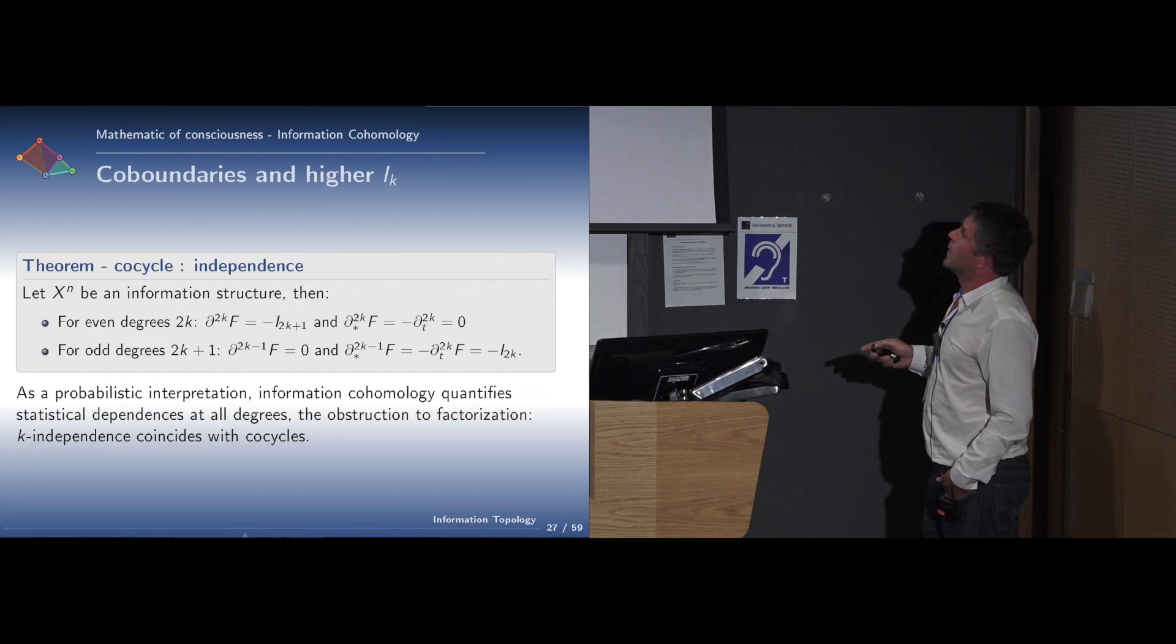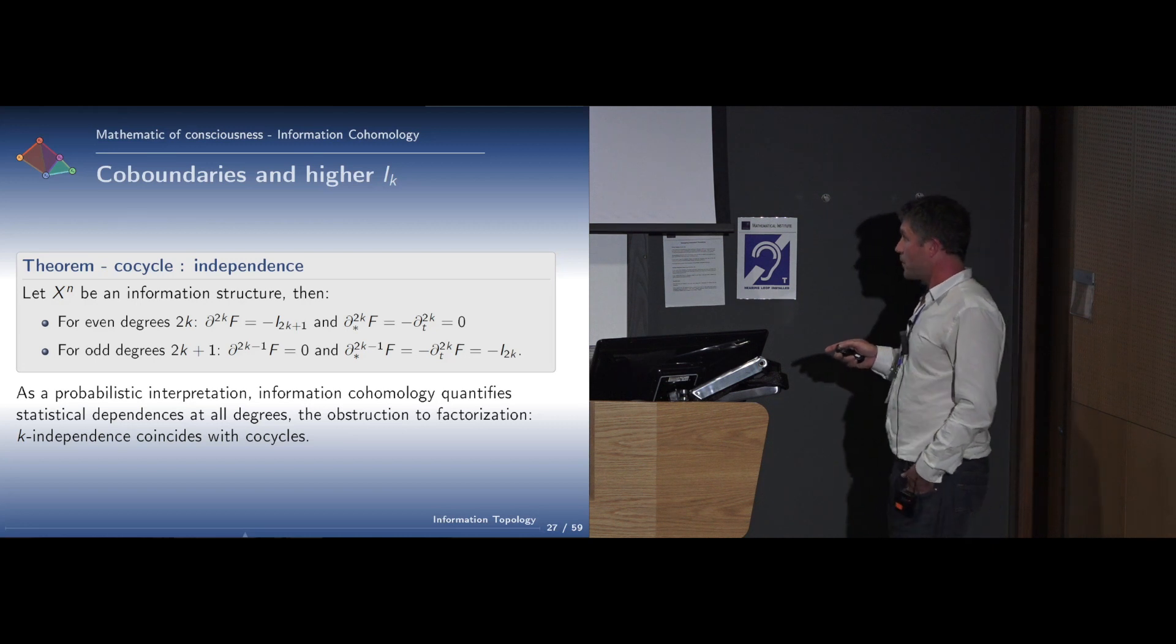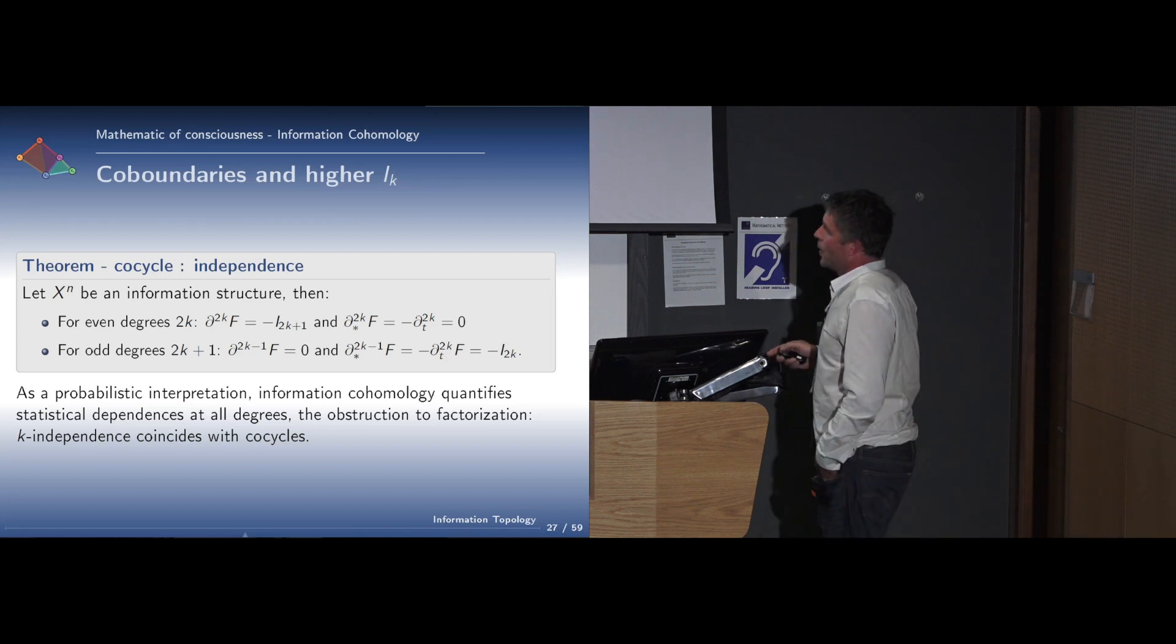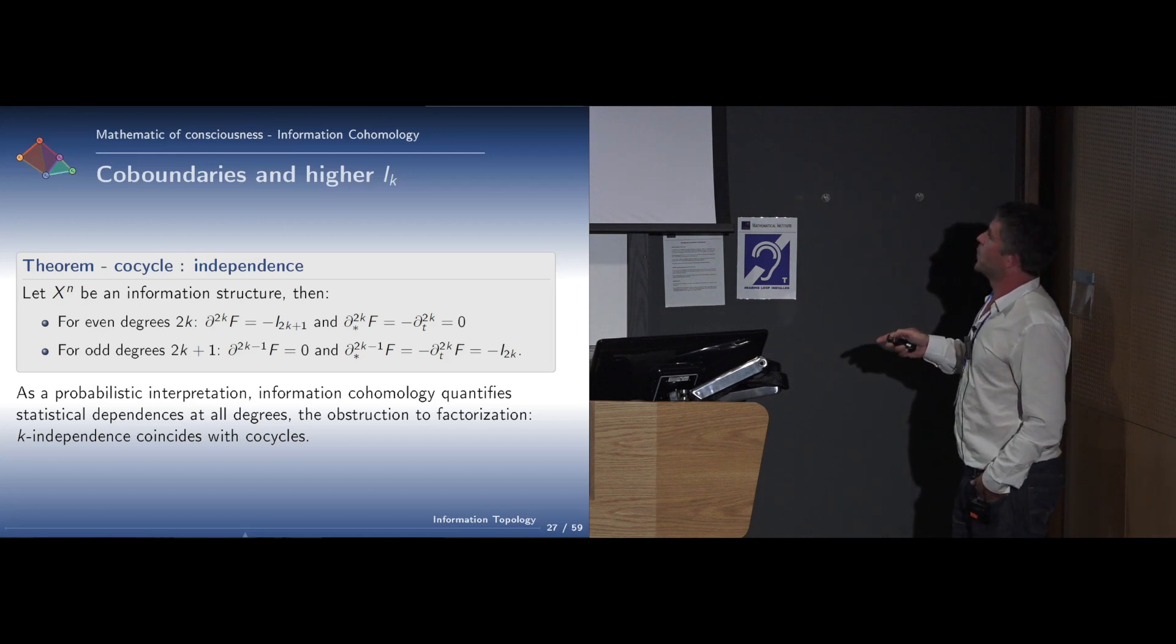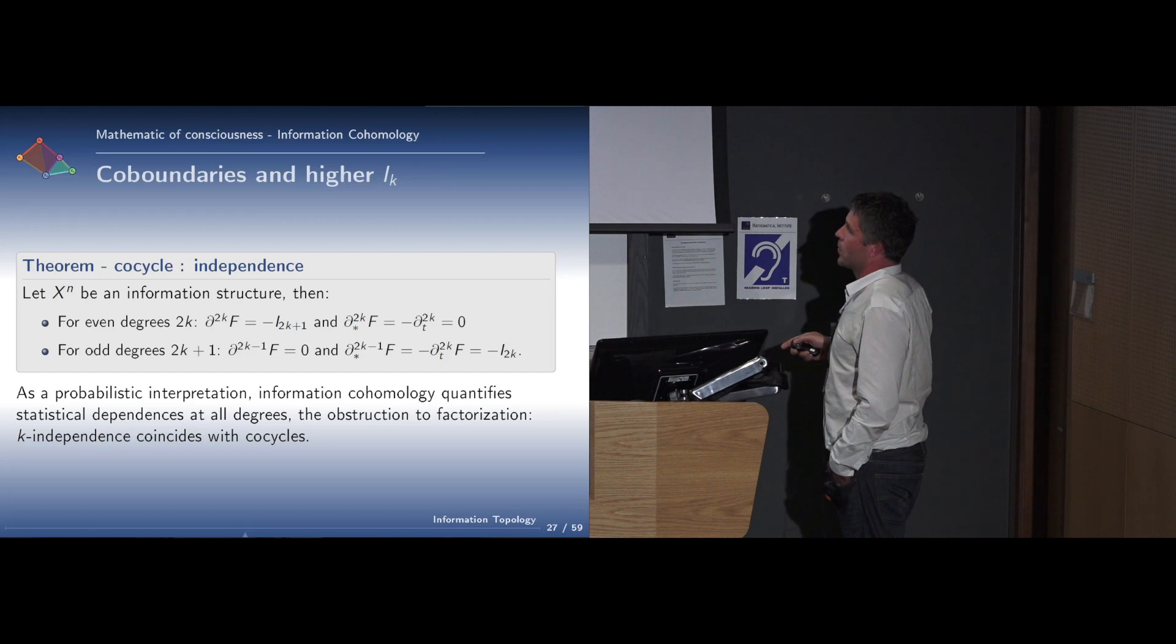What is nice also is that for even degrees, the boundary for even to odd degrees correspond to mutual information with odd number of variables. In fact, it is a doubly graded algebra. We have another coboundary with a trivial or symmetric action. With this second coboundary, we have the odd coboundary, which gives the even information.